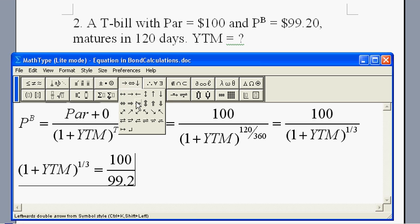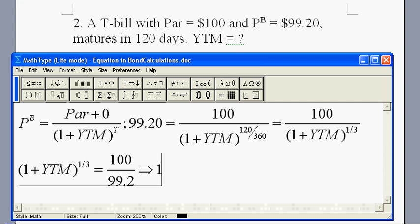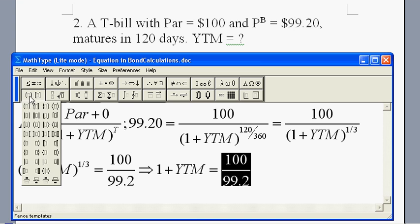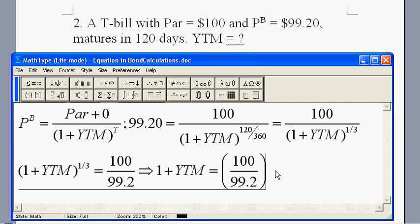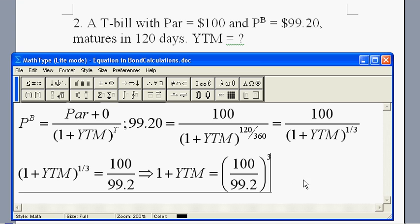So, this one gives me, one plus yield to maturity equals this ratio. Now, the price—let me make a bigger parenthesis—and then, to the third power. So, this one to the third power.